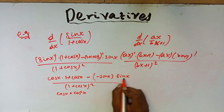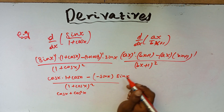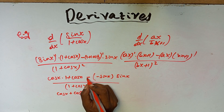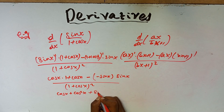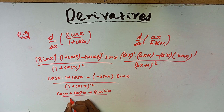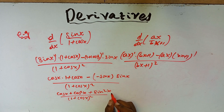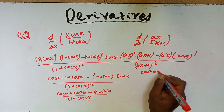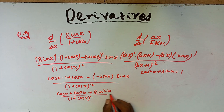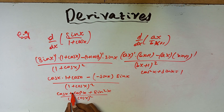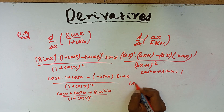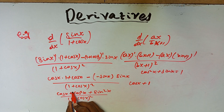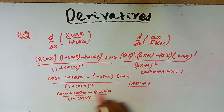So the numerator becomes: cos x times (1 plus cos x) minus sin x times (minus sin x), all over (1 plus cos x) squared. Expanding: cos x plus cos squared x plus sin squared x, over (1 plus cos x) squared. Using the identity cos squared x plus sin squared x equals 1.